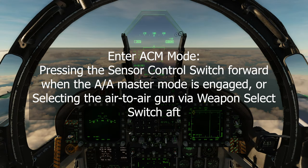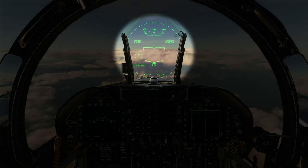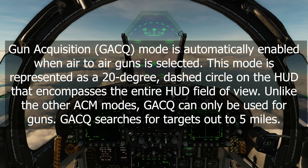So how do we enter ACM mode? You can use gun acquisition or use the sensor select forward switch to go into boresight mode. First, we'll select gun to go into gun acquisition mode. After hitting the gun acquisition HOTAS command, you can see there's a dashed circle in the HUD and on the right DDI it is boxed and says ACM. Selecting the gun puts ACM into gun acquisition mode, and it is automatically enabled when air-to-air guns is selected.